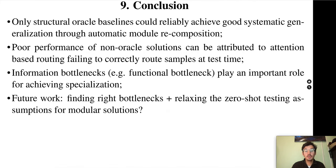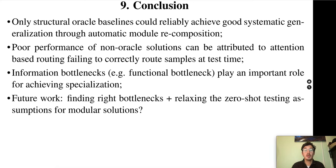To conclude, achieving compositional modularity is a hard task even in such a simple setting as solving math equations. Only the structural oracle baseline was able to reliably achieve systematic generalization. We showed that poor performance of non-oracle solutions can be attributed to the attention-based routing failing to correctly route samples at test time. We also showed that information bottlenecks play an important role for module specialization and preventing collapse.